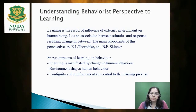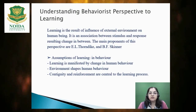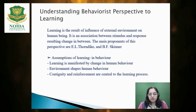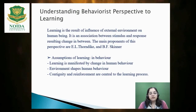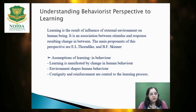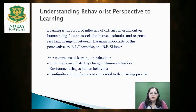First is understanding the behaviorist perspective of learning. As per the behaviorists, learning is the result of the influence of external environment on human beings. It is an association between stimulus and response and the resulting change. The main proponents of this perspective are Thorndike and Skinner. They concluded that learning is manifested by change in human behavior. Environment shapes human behavior, and contiguity and reinforcement are central to the learning process.